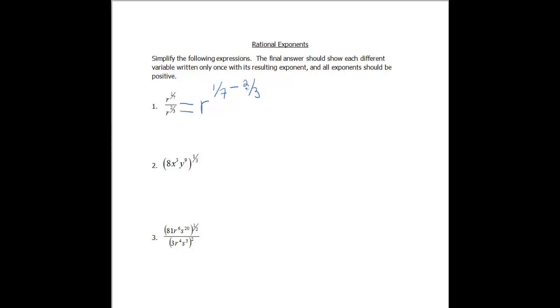Now because we're subtracting two fractions, we need to find a common denominator. So that would look like r to the, well our common denominator is gonna be 21. If you multiply 7 by 3, that gives you 21. So multiply the 1/7 by 3/3. So that's gonna give us 3/21 minus multiply the 2/3 by 7/7 to build up to 21. So this would be 14/21. So now that we have our common denominator, we can subtract.